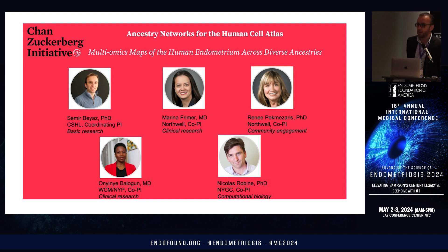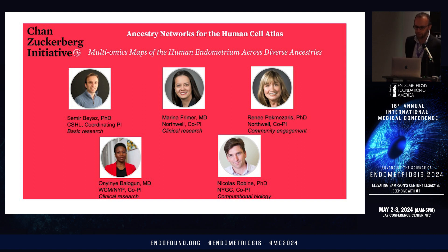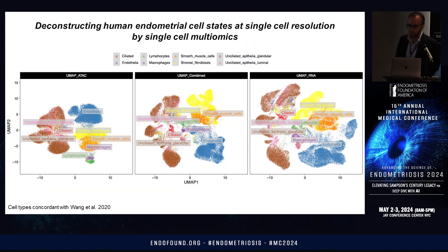This map has an emphasis on patients across diverse ancestries, because most of the genomics data in humans exists from unfortunately one or two dominant ancestries, like European ancestry. So we put together a team of clinicians, community engagement specialists, clinical researchers, and computational biologists, and received a Human Cell Atlas grant from the Chan Zuckerberg Initiative to make a Rosetta Stone of endometrium.